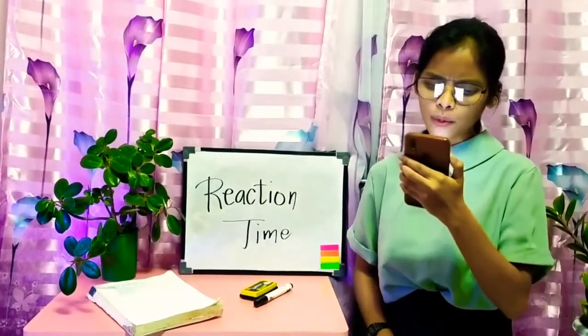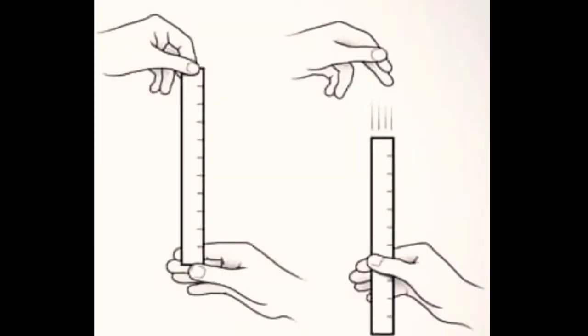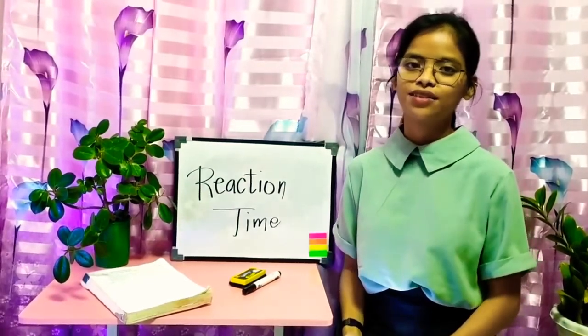Reaction time refers to the speed at which a person responds to an external stimulus. For example, the stick-grab test. Here's a photo of the sample. For this activity, we just need a table and a ruler.